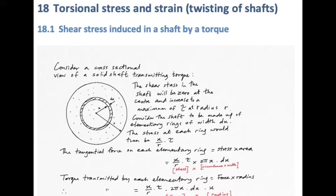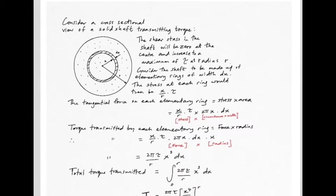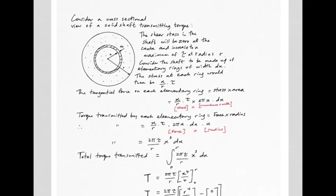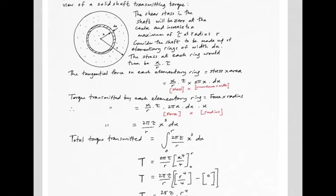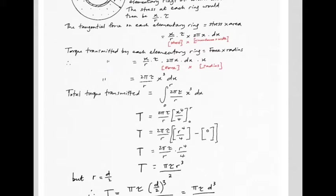The tangential force is stress times area, where area is the circumference — the length of the ring laid out straight — multiplied by its width dx. We then multiply by x to get torque. Rearranging, the constants move left and we get x to the 3 on its own. Integrating from x = 0 to x = r, x cubed integrates to x to the 4 over 4. Applying the limits, we are left with 2π tau over r times r to the 4 over 4, which simplifies accordingly.